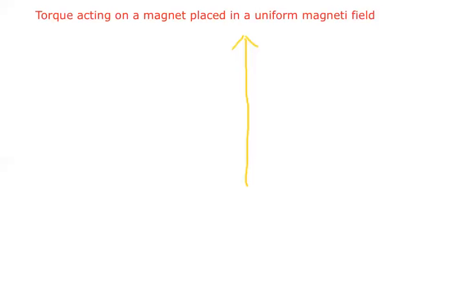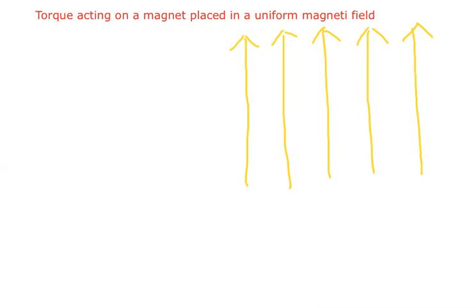First let us draw the uniform magnetic field indication. I am drawing straight and parallel vertical lines. This indicates a uniform magnetic field — straight and parallel lines.